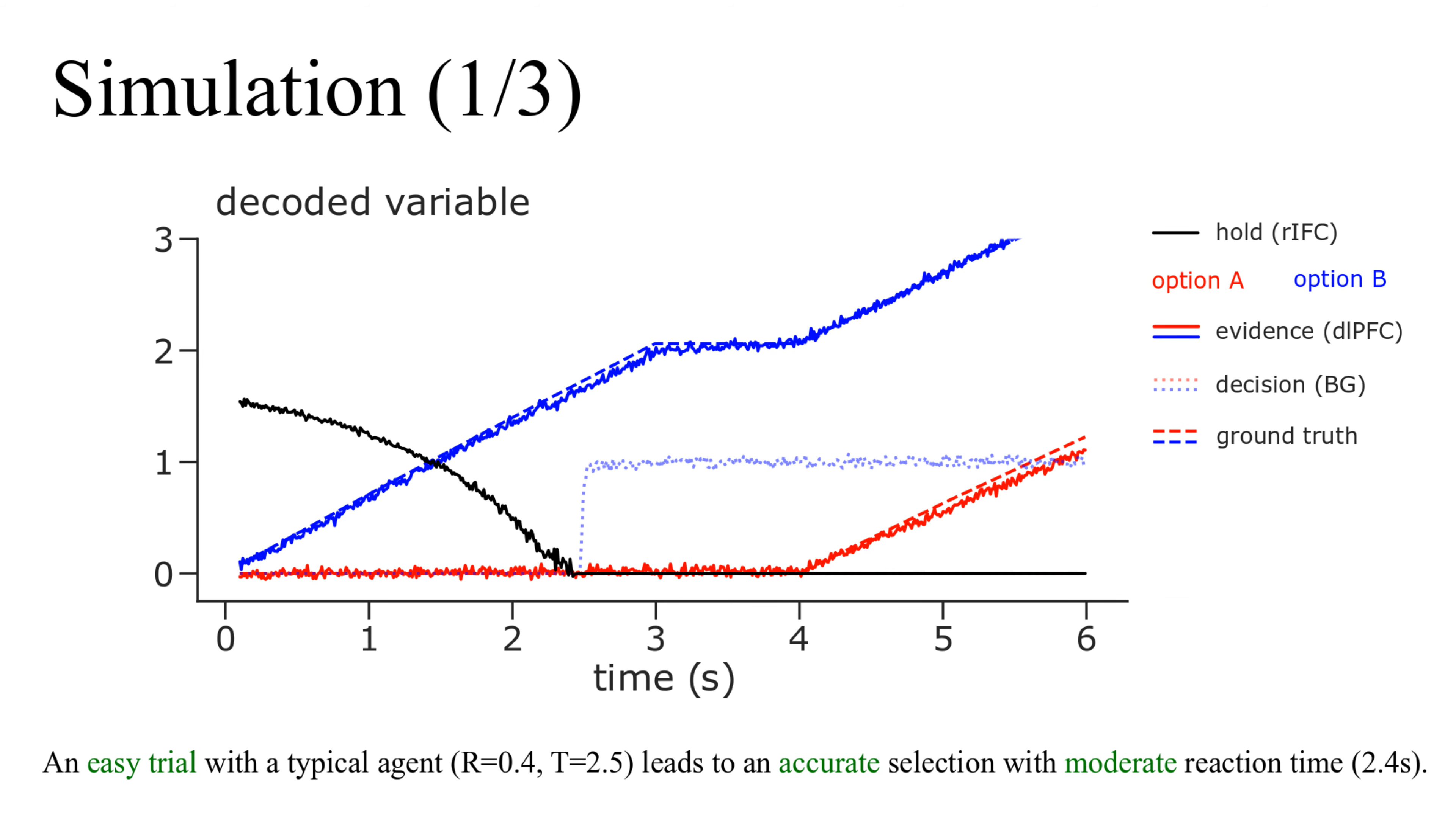To simulate a decision-making agent with the proposed model, we choose values for T and R, build the network, and have the agent perform our task. As cues are presented and evidence accumulates, neurons in PFC become active, encoding the total utility for options A and B.